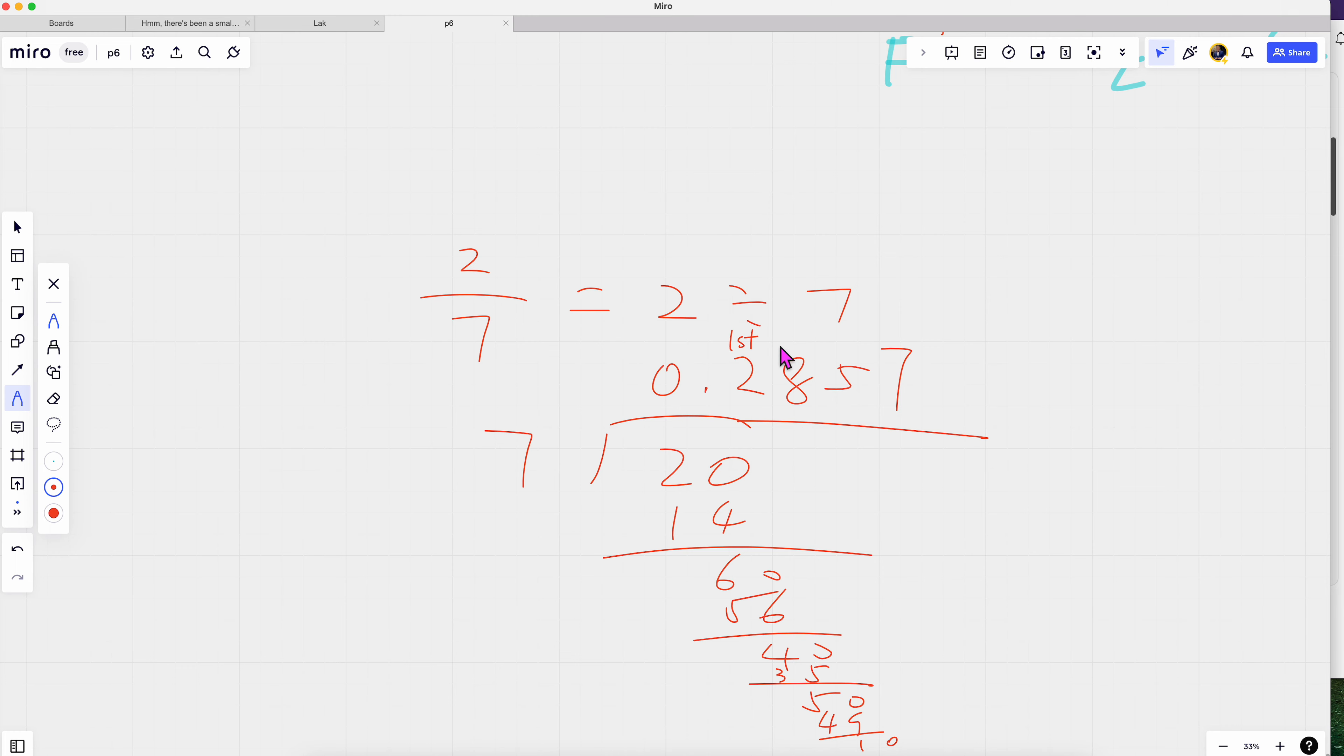So this is your first decimal place, this is your second decimal place. They want two, that means you stop and you look at the third decimal place. So it's five.